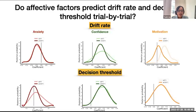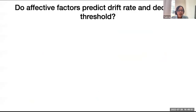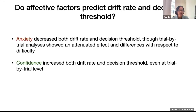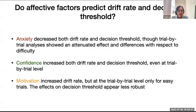To briefly summarize, we examined the role of anxiety, confidence, and motivation on drift rate and decision threshold. Anxiety decreased both drift rate and decision threshold, though trial-by-trial analysis showed an attenuated effect and differences with respect to difficulty. Confidence increased both drift rate and decision threshold, even at the trial-by-trial level. Motivation increased drift rate, but at a trial-by-trial level only for easy trials; the effects on decision thresholds appear less robust.